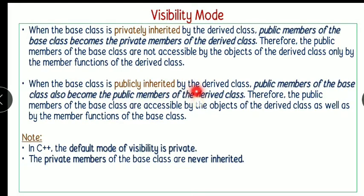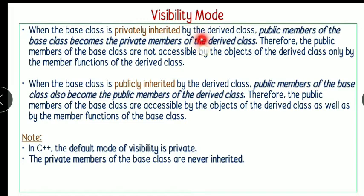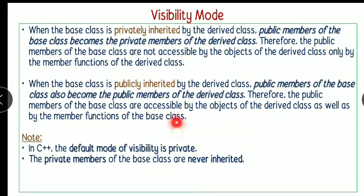When a base class is publicly inherited by the derived class, then the public members of the base class also become the public members of the derived class. Therefore, we can access the public members using objects of the derived class as well as by the members of the class. So two things we have seen about visibility mode: when privately inherited, all public members become private in the derived class; when publicly inherited, all public members remain public.